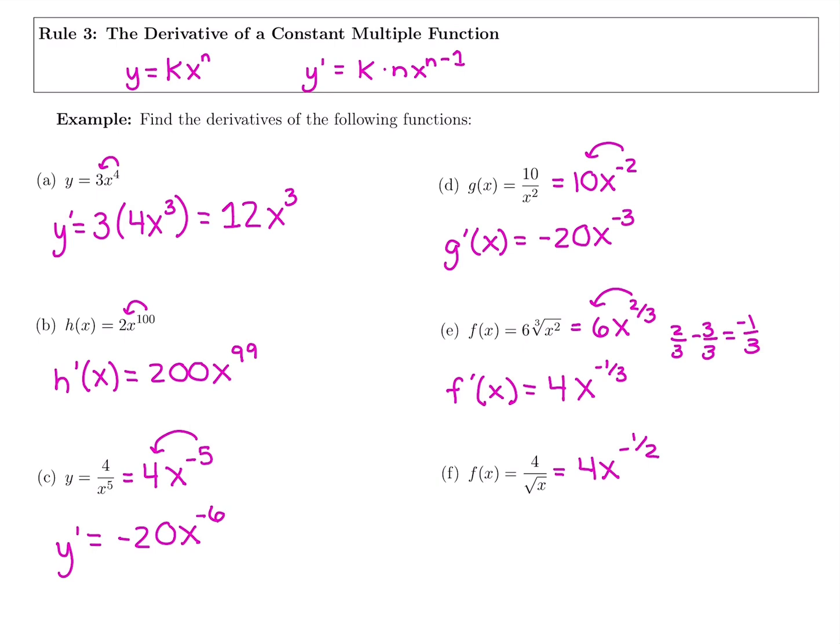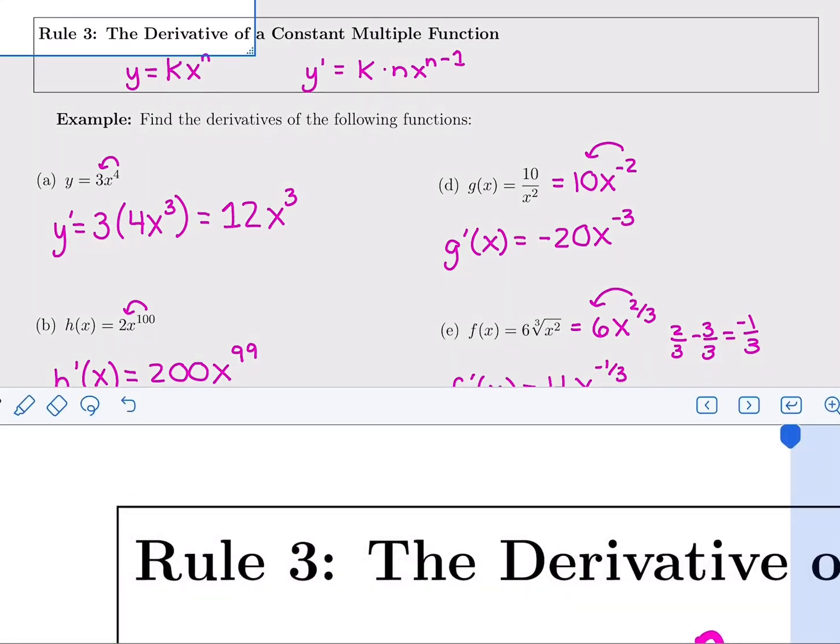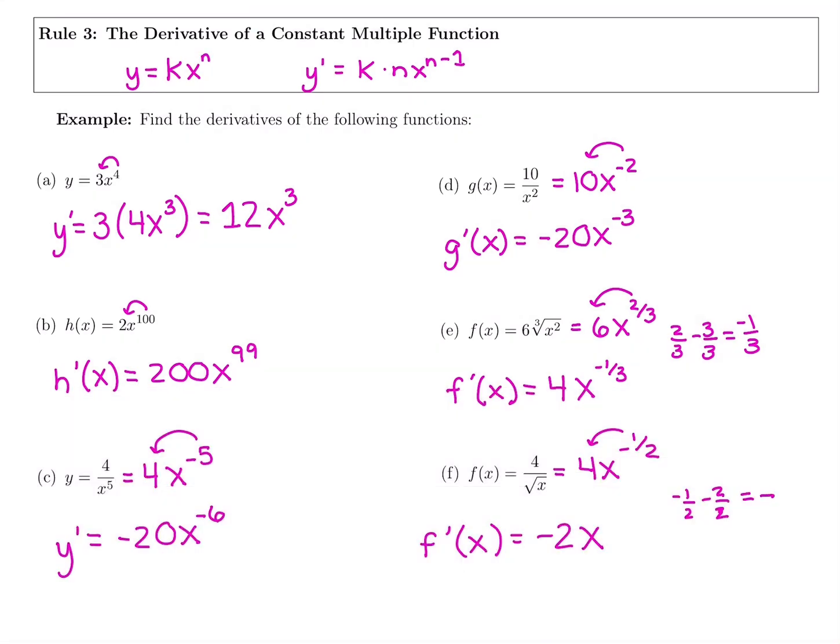And now I can bring down the power, subtract from the new power. If you need a calculator, that's fine. But negative 1 half of 4 is going to be negative 2, and then we have x to the negative 1 half minus 1 is subtracting 2 halves from this. So negative 1 minus 2 gives us negative 3 halves. Bring down the power, subtract 1 for the new power.